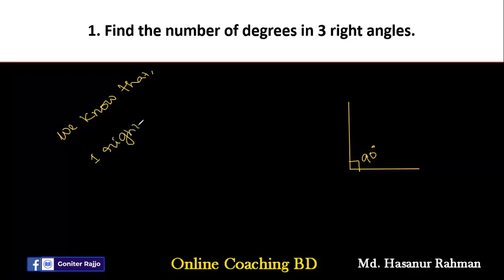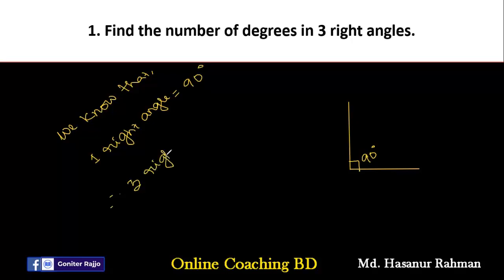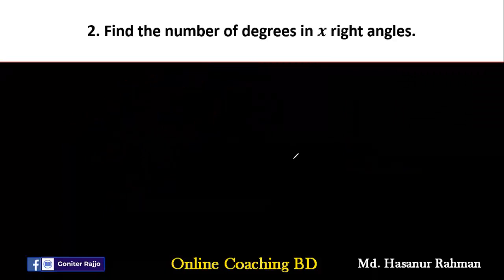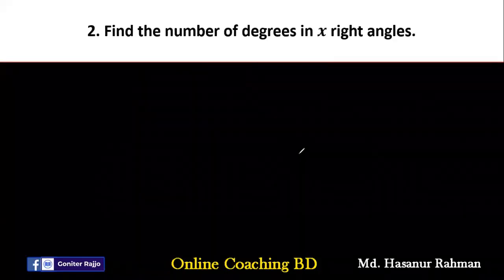We know that one right angle is equal to 90 degrees. Therefore we can say three right angles will be three multiplied by 90 degrees — that gives us 270 degrees.